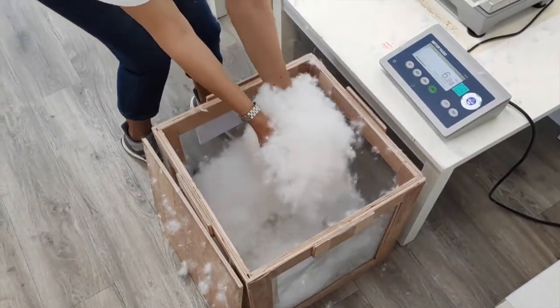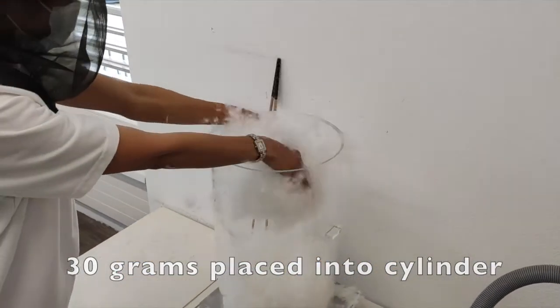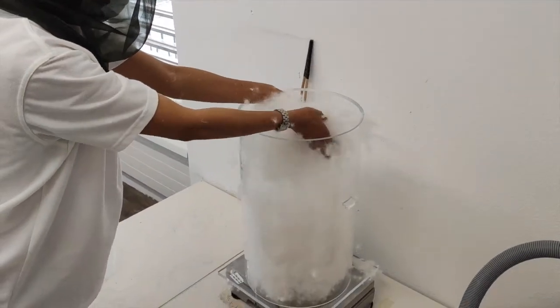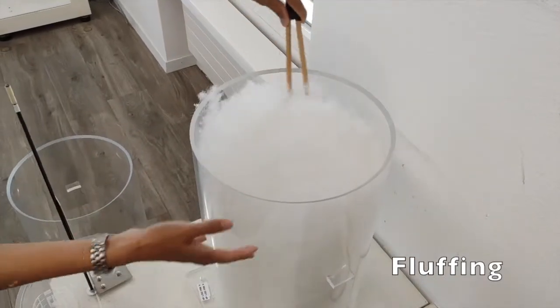To measure fill power, 30 grams of down is placed in a large cylinder. It is then fluffed up using the most majestic chopsticks that you have ever seen.